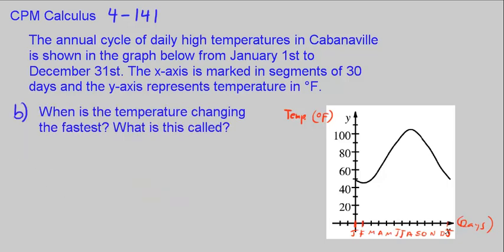Part B says when is the temperature changing the fastest? We know that here we look at the slope, and where is the slope the greatest? Well, I would say it's around here, and also around right here. So this is around May, so fastest May, and I would say that's increasing temperature. And also, I would say decreasing around the beginning of December, the end of November, also November-December time, decreasing.